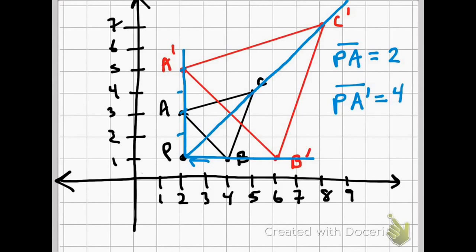Since A prime is the new shape, you find the scale factor by dividing the new by the old. So this would simply be four over two, which simplifies to two. And that is your scale factor.